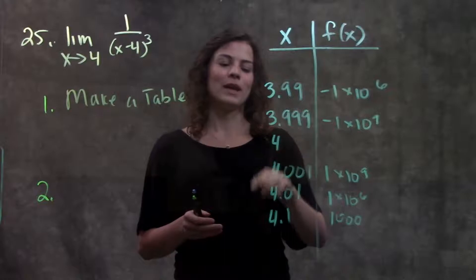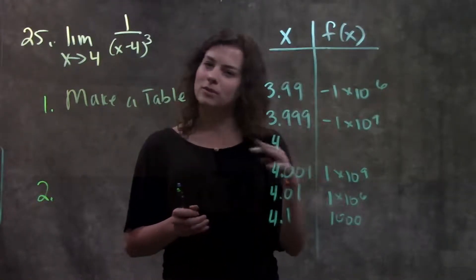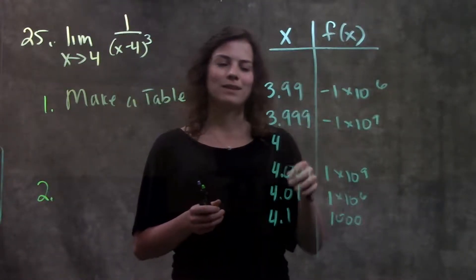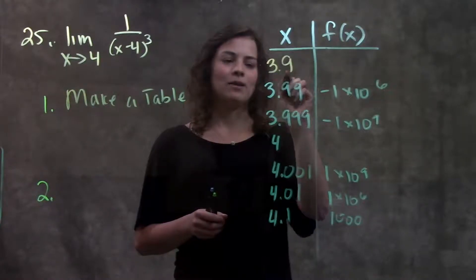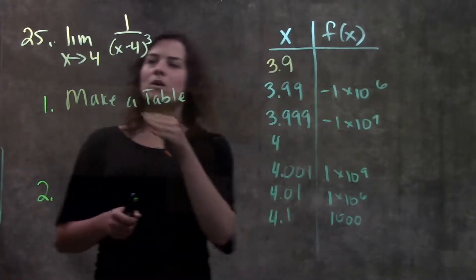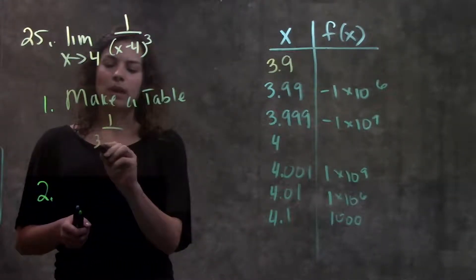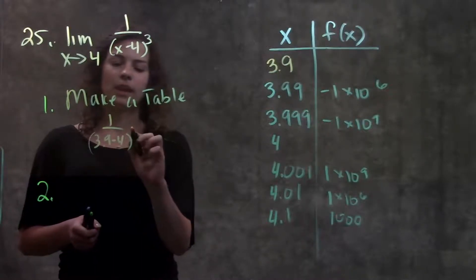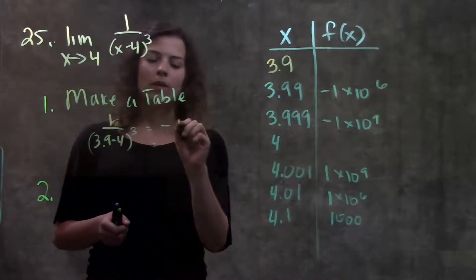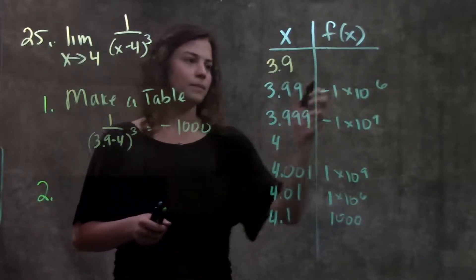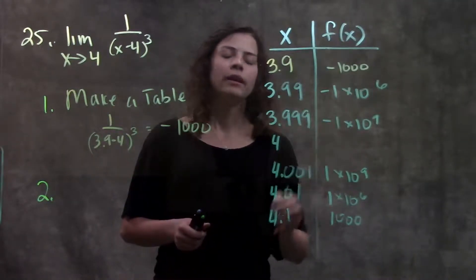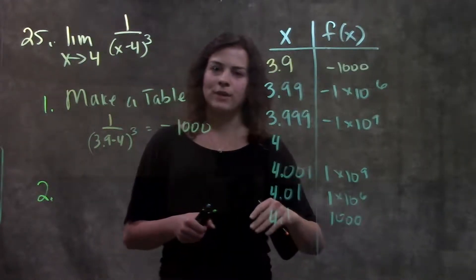So conveniently I already have a table here for you. It's approaching 4 from the left and the right hand side. I'm not going to go through this entire table but I'll go through the first line with you. So let's say we plug in 3.9 into our table. We plug in 3.9 wherever we see an x and when we solve all this out we're going to get negative a thousand.